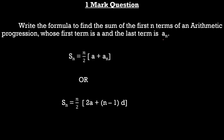The formula is Sₙ = n/2 × (a + aₙ). You can also write Sₙ = n/2 × (2a + (n−1)d). You need to remember all the formulas of arithmetic progression.